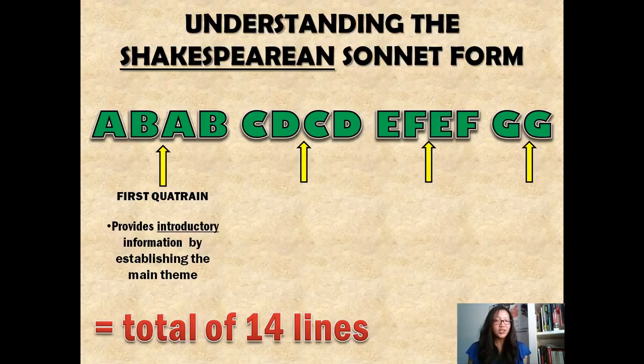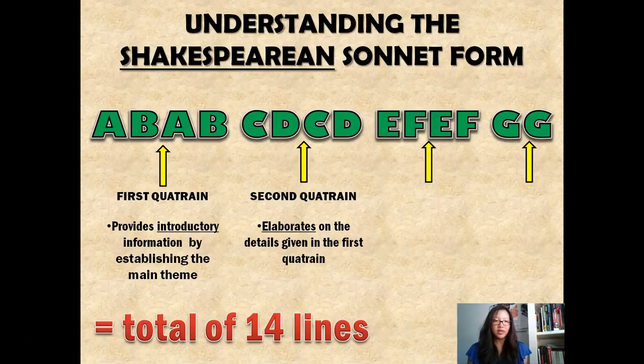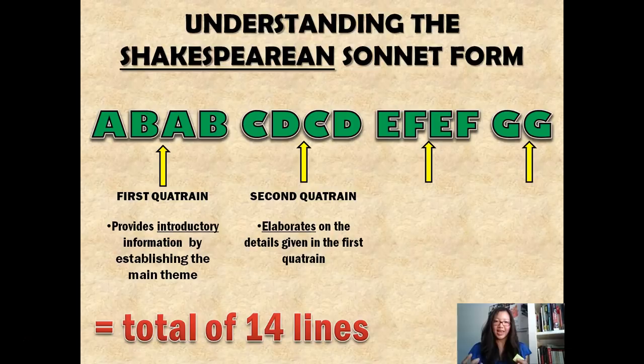The next stanza follows the pattern CDCD. In this quatrain, it further elaborates on the first quatrain and might provide some rising action details, tying into loose ends that are beginning to form a theme emerging in the text. The third quatrain then introduces a conflict or a shift in some sort of tone, also known as volta. When we look at the prologue, we will see that the use of the word 'but' employs this change in shift and tone.